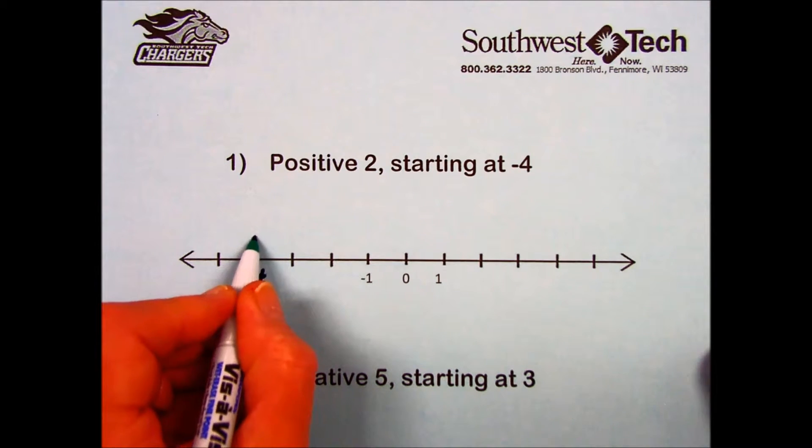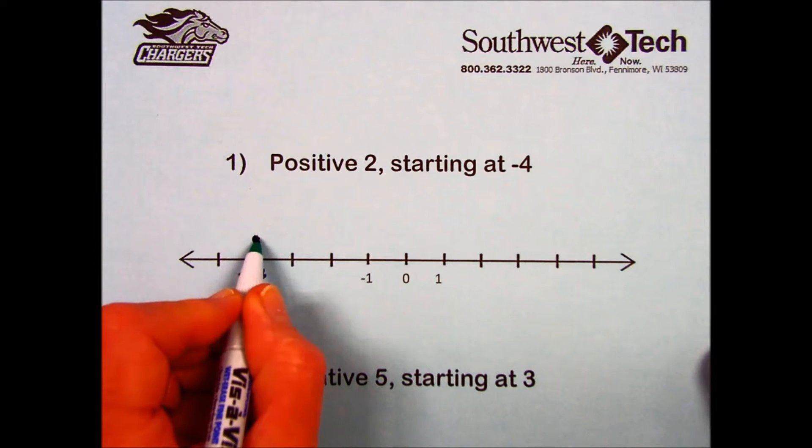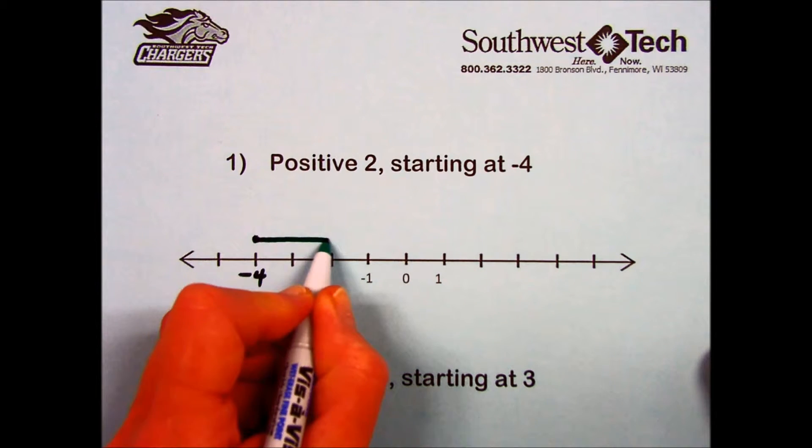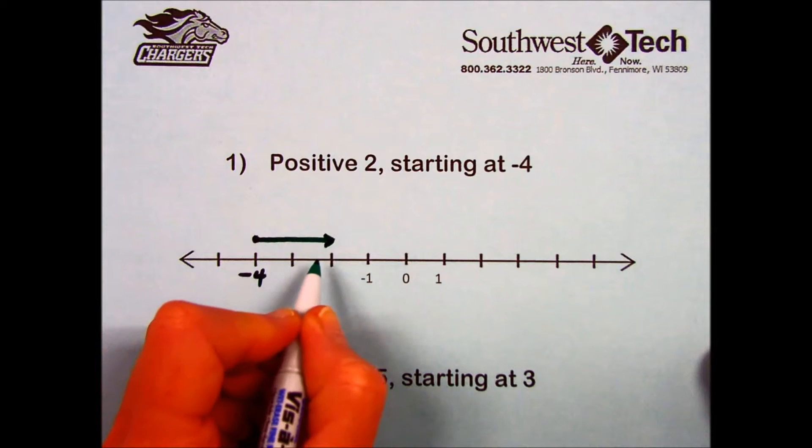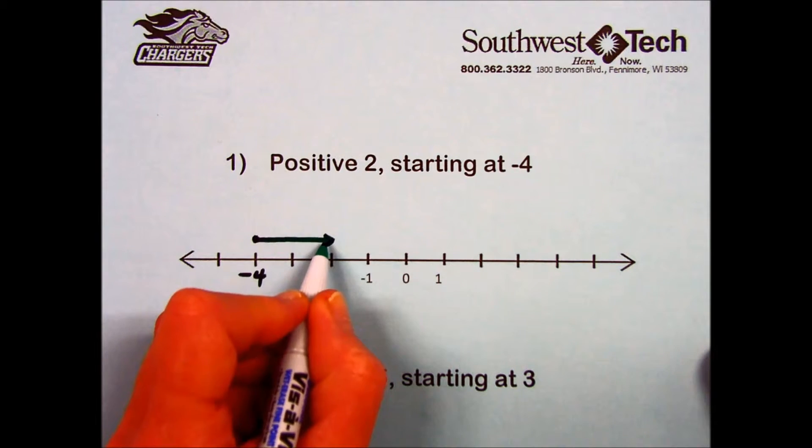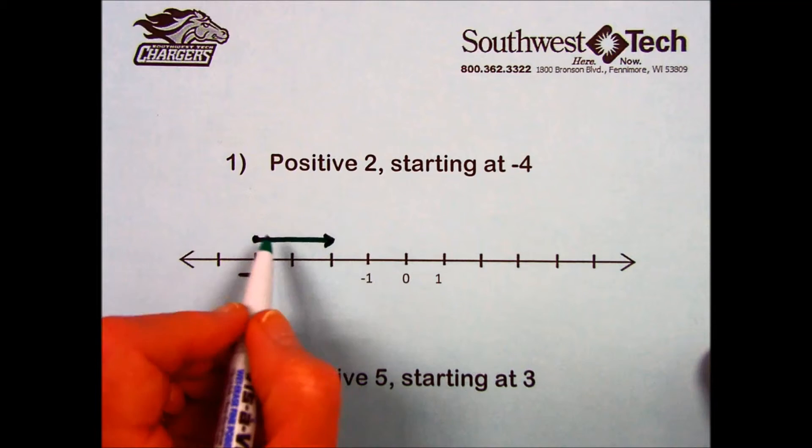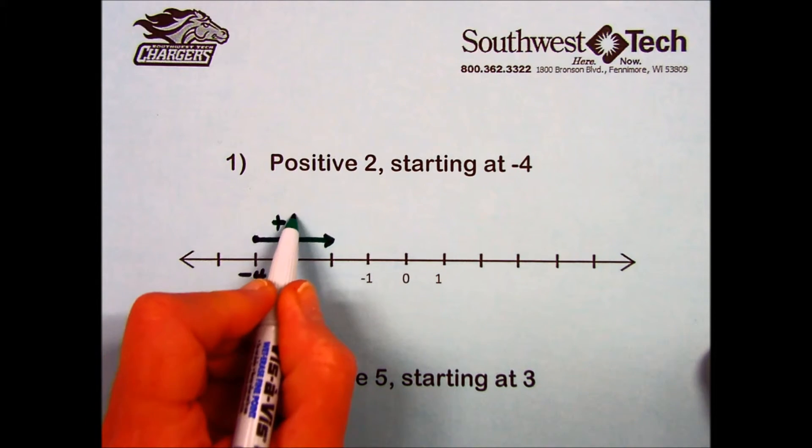And then it's asking us to indicate a positive 2. Positive numbers are in the direction to the right, and the length of the arrow indicates the number that we're adding. This would be the plus 2.